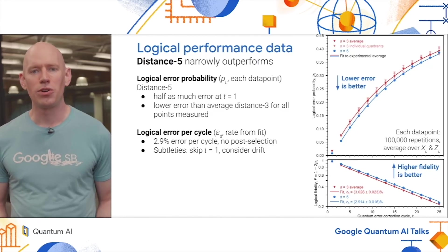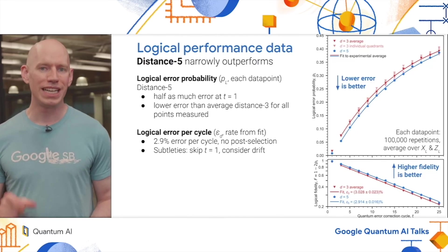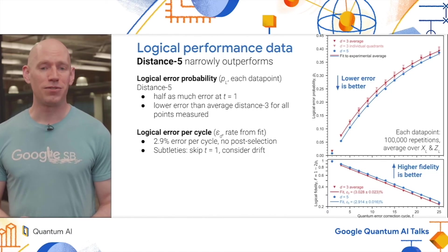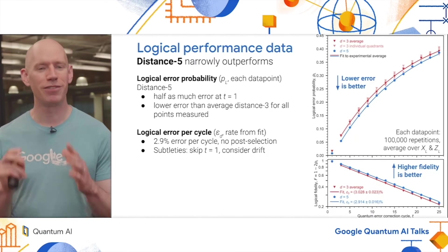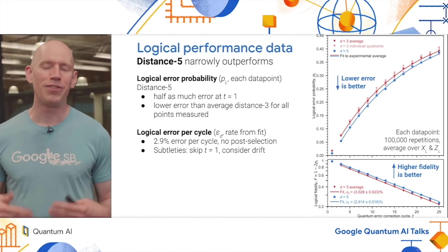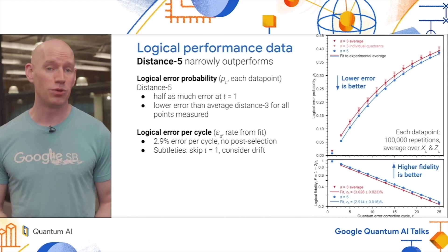Besides looking at the probabilities, we can also look at the logical error per cycle, basically the probability of each cycle that we accidentally flip our logical value. This is based on a fit to these curves, specifically looking at the exponential decay of the fidelity. What we observe for distance five is an error per cycle of 2.9%, which again is with no post selection, not tossing away any data here. There are a couple of minor subtleties I would raise with this fit. First, we skip the very first point, time equals one. That's because at the very beginning of the experiment, there is no history of previous errors that can mess up the codes. So the logical performance is better in a way that advantages the larger code. We skip that from the fit because it doesn't really fit the model of a constant error per cycle. We also consider drift that might happen between individual experiments when evaluating the error bar on these values.